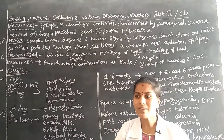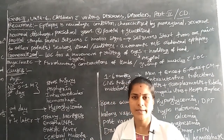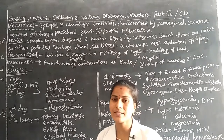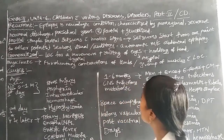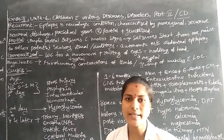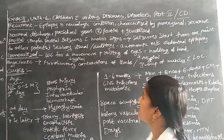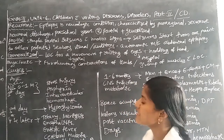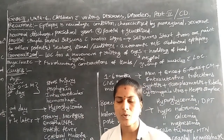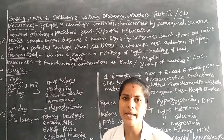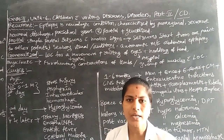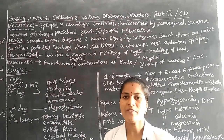Recurrent convulsive disorders have two subtypes. The first one is partial recurrent seizures, and the other one is generalized recurrent seizures. These are the two types under recurrent convulsive disorders.